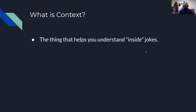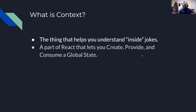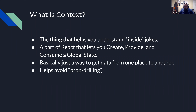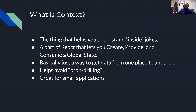So what is context? It's that thing that helps you understand inside jokes — my first dad joke. But seriously, context is a part of React that lets you create, provide, and consume a global state object or value. It's basically a way to get data from one place to another within a React application. It helps avoid prop drilling, where you pass a prop to another component, and another, and just keep drilling it down.